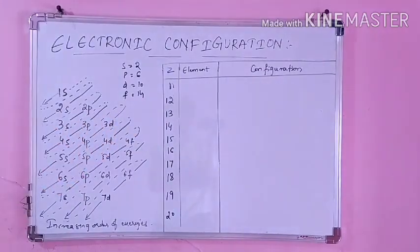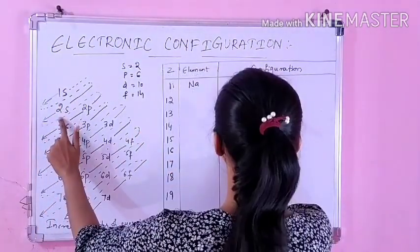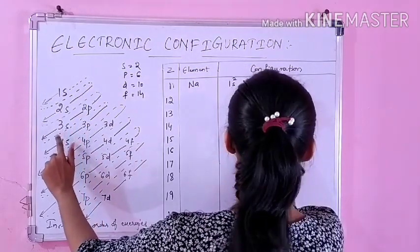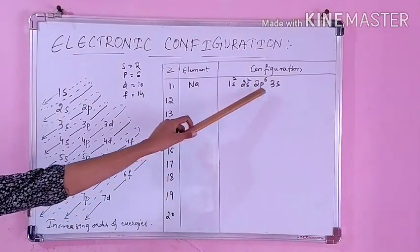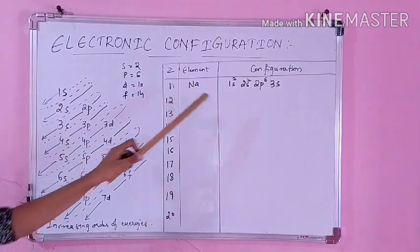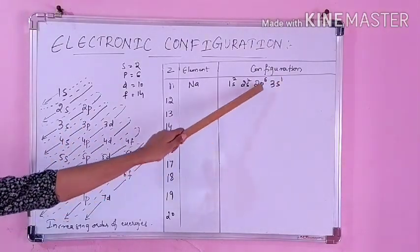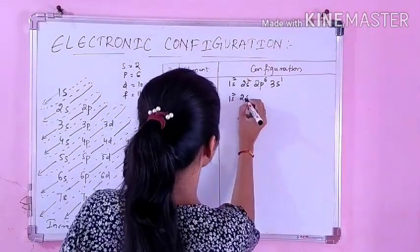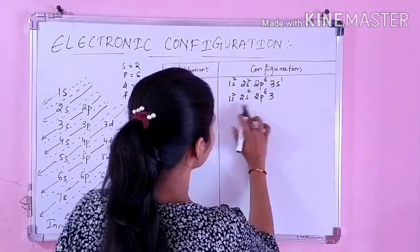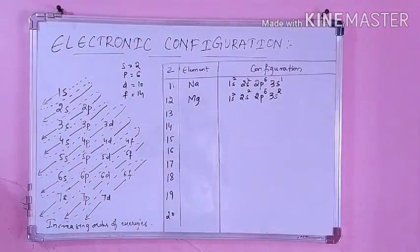Next, atomic number 11 is sodium. We start writing: 1s² 2s² 2p⁶ — that accounts for 10 electrons. Then 3s gets 1 electron: 3s¹. For magnesium (Z=12), the configuration is the same up to 2p⁶ (10 electrons), and then 3s can accommodate 2 electrons — so it is 3s².